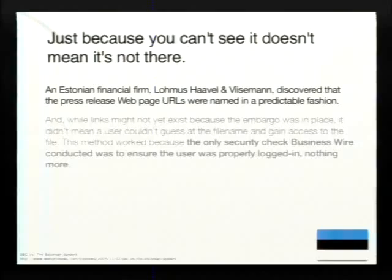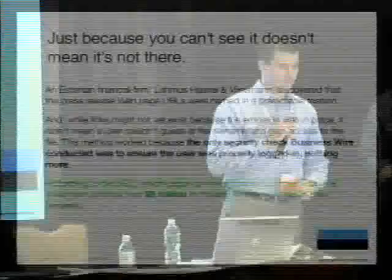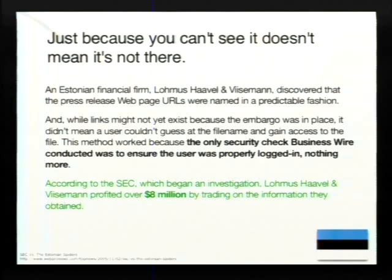An Estonian financial firm discovered this — it was a brilliant move. Just because it wasn't linked didn't mean they couldn't find it. They managed to make some really smart bets. There was no sense of authorization — it's there, you can have it, we're just not going to tell you where it's at. $8 million trading on this information. The SEC flipped out a little bit.